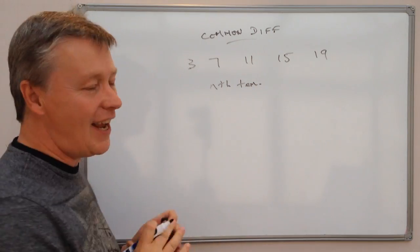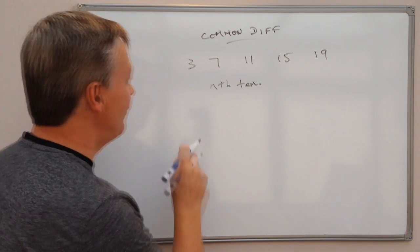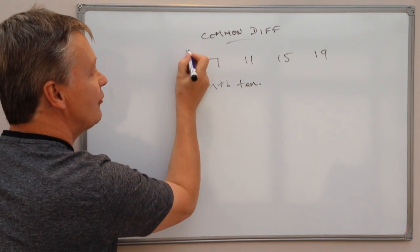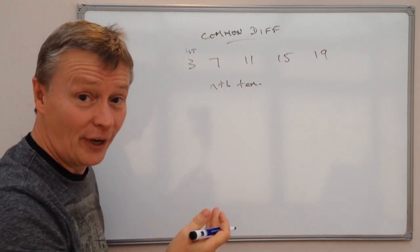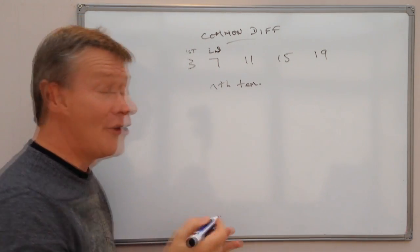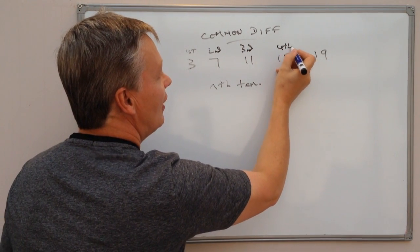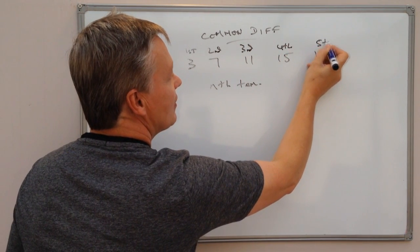Well the nth term all that means is it could be any term. So in this particular sequence, this is the first term, which is number 3. The second term, which is number 7. The third term, which is 11 and so on, 4th and 5th and so on.